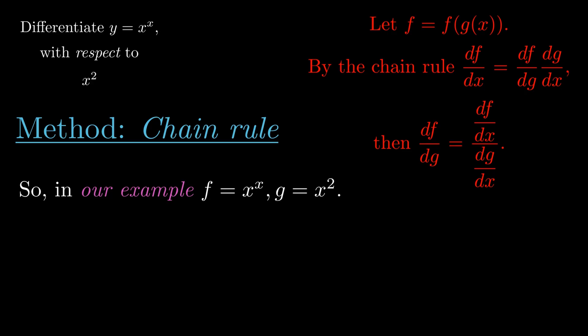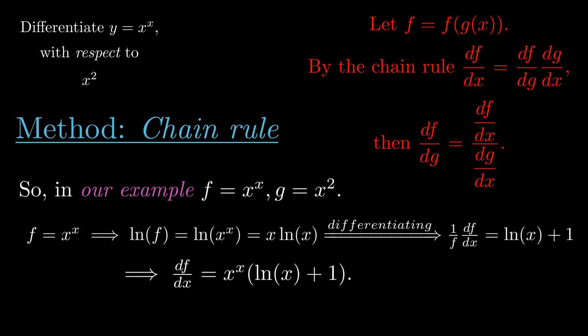Let's go ahead and do that. We begin by writing f is equal to x raised to x. If we take the natural logarithm of both sides, this implies that ln(f) equals ln(x raised to x), which we can rewrite as x multiplied by ln(x) using the power rule for logarithms. Differentiating both sides: the left-hand side uses the chain rule, giving (1/f)·(df/dx). For the right-hand side, we use the product rule, giving ln(x) plus 1. Multiplying both sides by f, we get df/dx equals x raised to x multiplied by (ln(x) + 1).